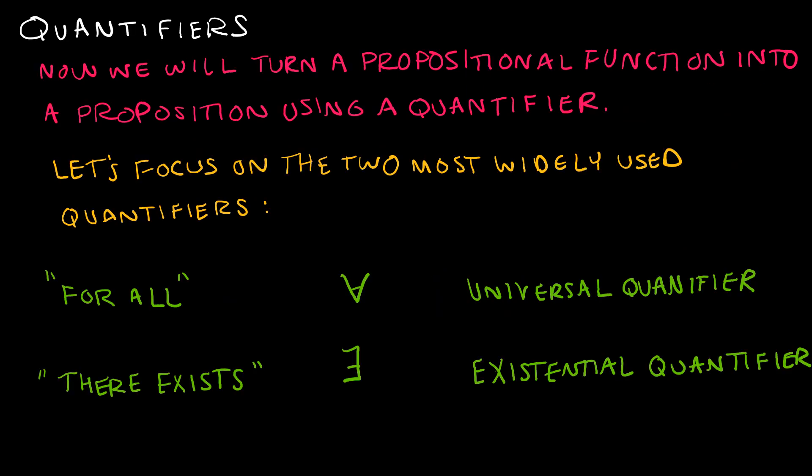Now we're going to take a propositional function and turn it into a proposition using a quantifier. So we are not going to give the variable a value. We're going to use a quantifier like 'for all x' or 'there exists some x.' These are the two most commonly used, and they're the ones we're going to focus on, though of course there are several more.